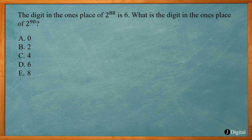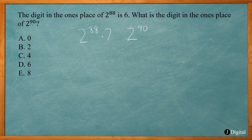To solve this problem, you have to look at 2 to the 88th and compare it to 2 to the 90th power. To go from 2 to the 88th power to 2 to the 90th power, you have to multiply it by 2 to the 2nd power. Because when you multiply with exponents, you add the exponents together, so 88 plus 2 gives you 90.